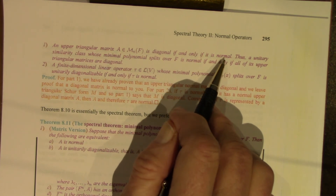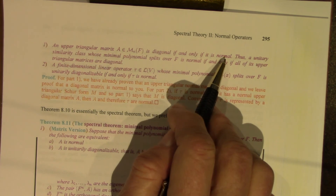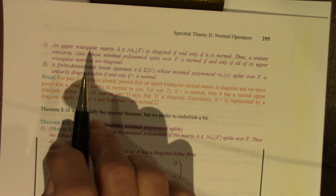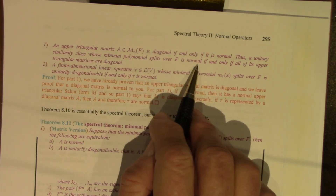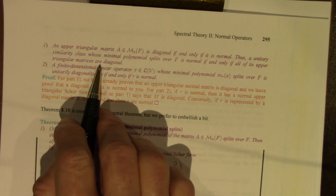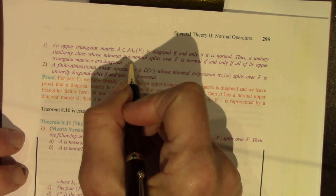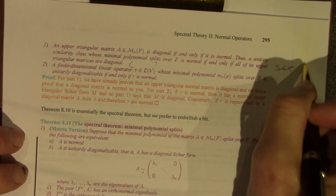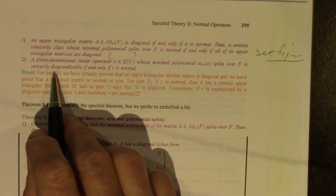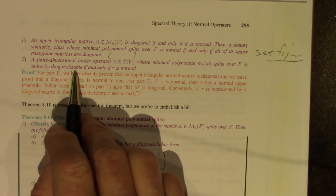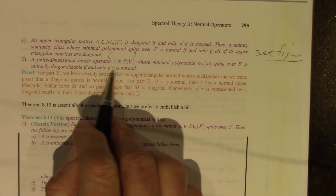That was the direct conclusion from the analysis we did at the beginning of the lecture. Thus, a unitary similarity class whose minimal polynomial splits is normal if and only if all of its upper triangular matrices are diagonal. A finite dimensional linear operator tau whose minimal polynomial splits is unitarily diagonalizable — representable by a diagonal matrix under an orthonormal basis — if and only if tau is normal, because tau is normal if and only if its matrix representations are normal.